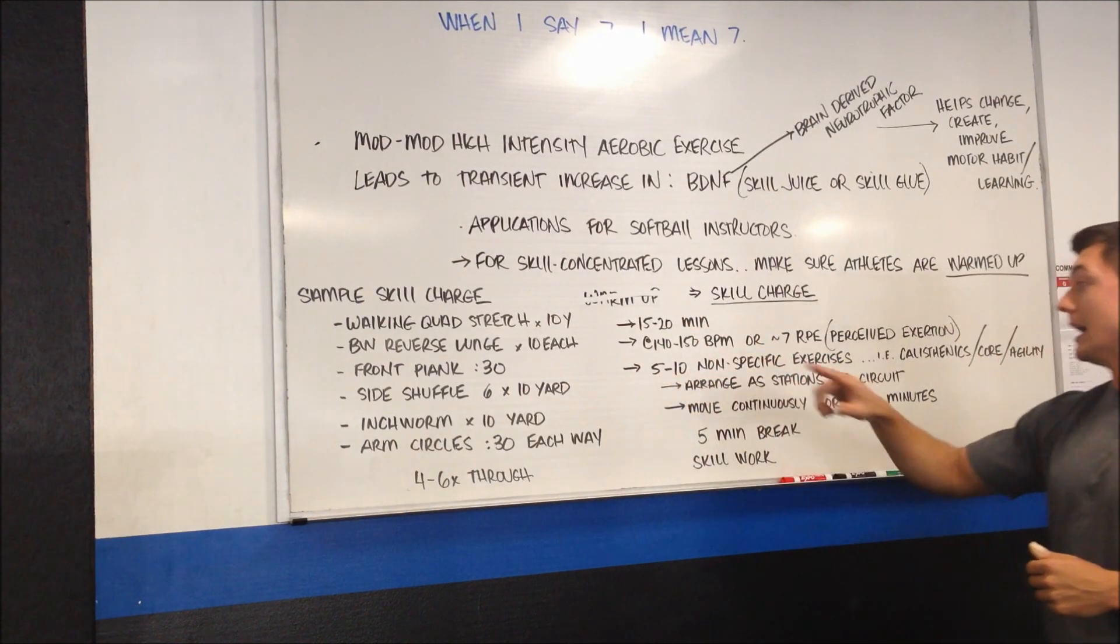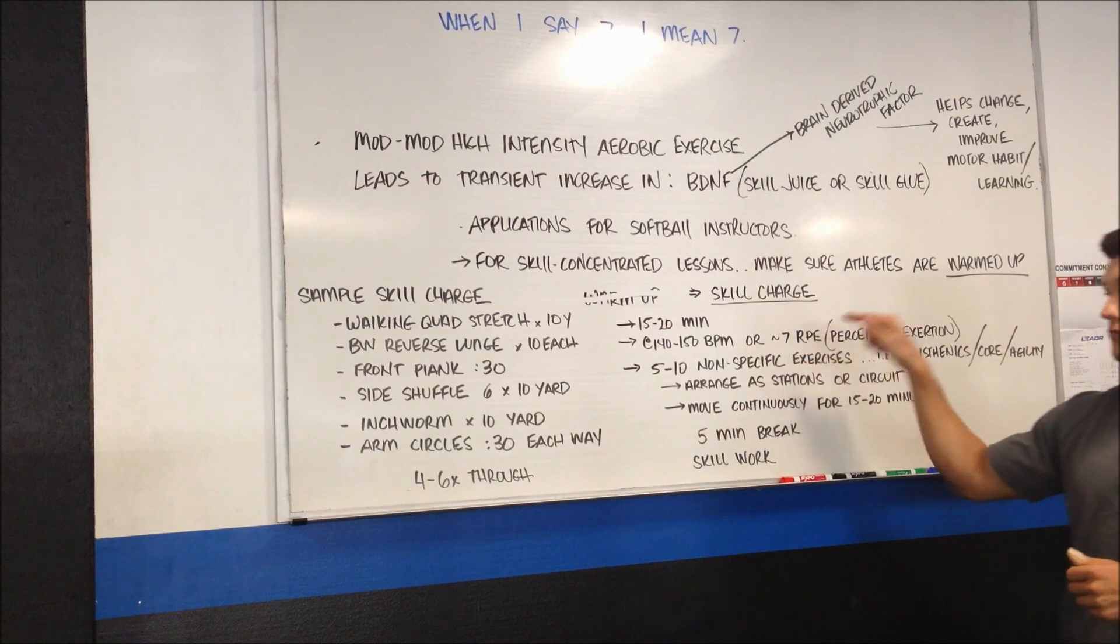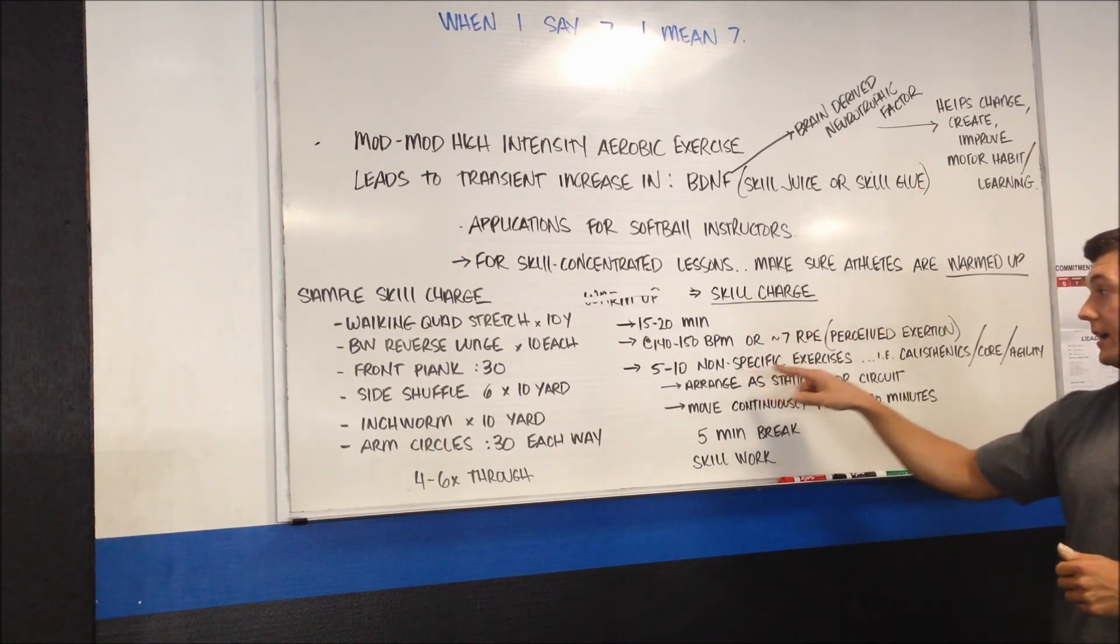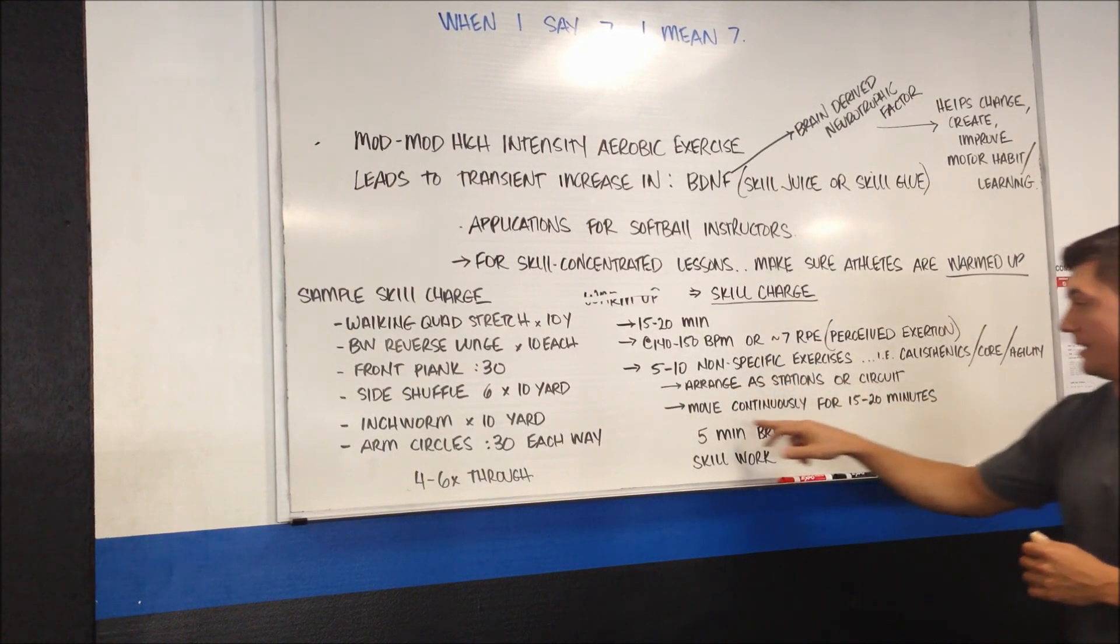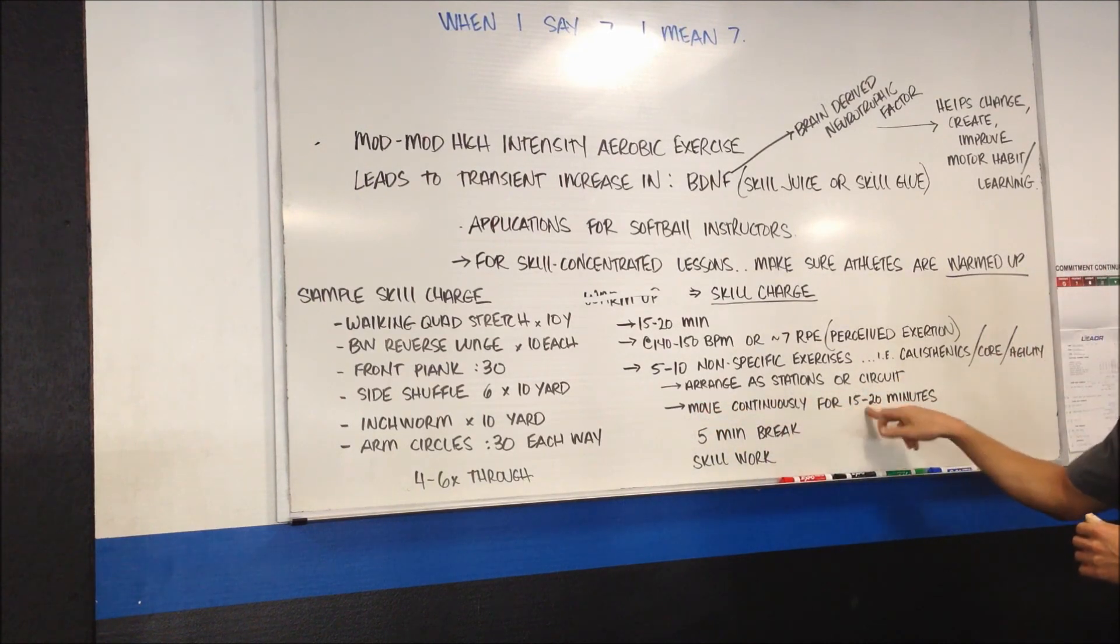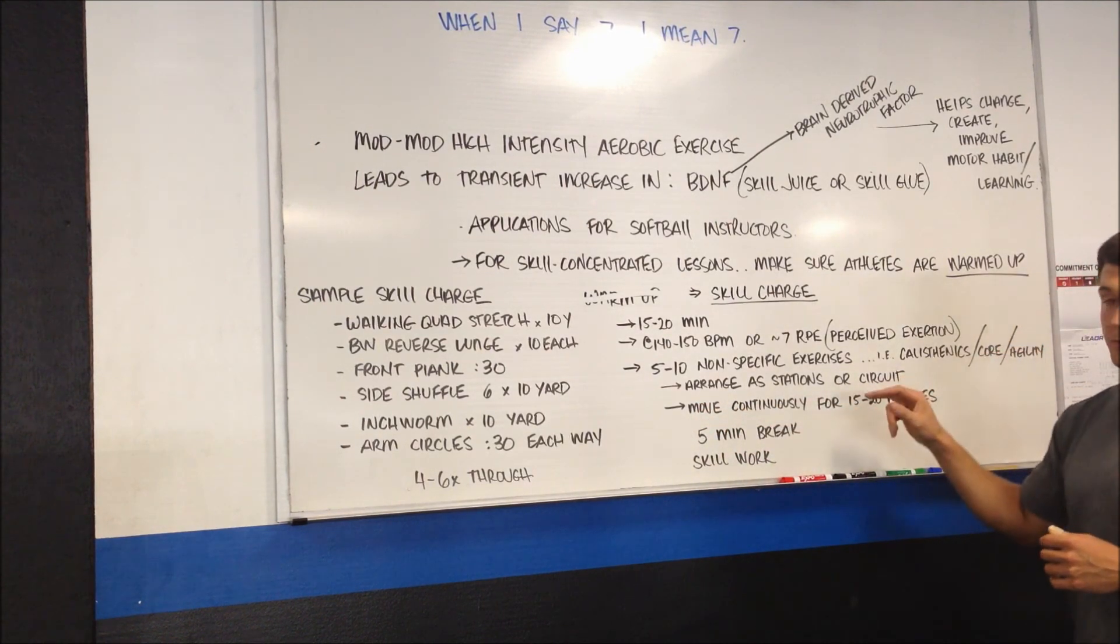You're going to take 5 to 10 non-specific exercises. Do not pick up a ball. Throw the gloves away. Do some calisthenics, some core exercises, some agility. If you have a speed ladder, you have some cones. The younger they are, have some fun with them. Get them moving. Arrange them as stations or a circuit. Move continuously for 15 to 20 minutes. Continuously.